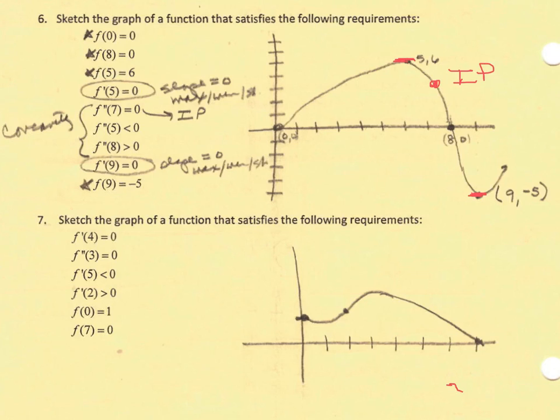So that's interesting, but I need more information. So I have the information right here that f prime prime of 5, which is a flat point, is less than 0. If it's less than 0, it's concave down, and that's why I now can make the concave down shape at the point 5, 6.